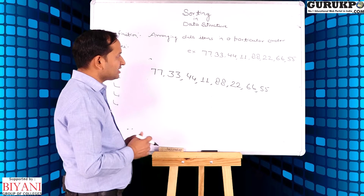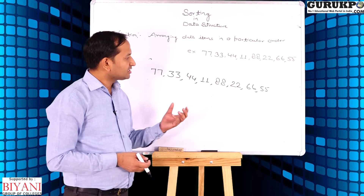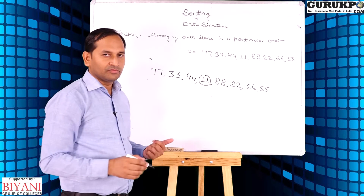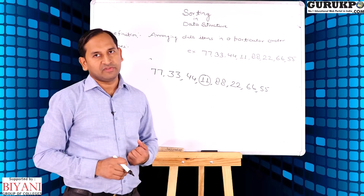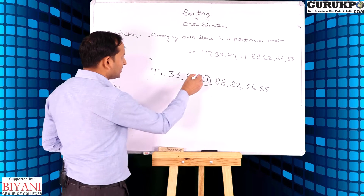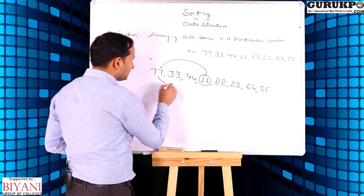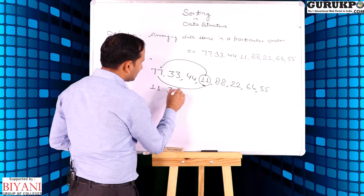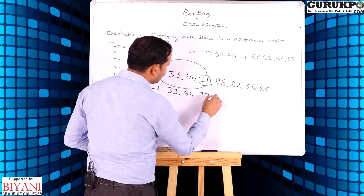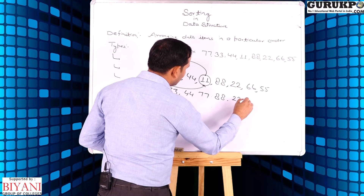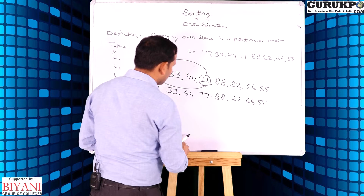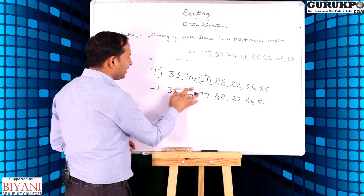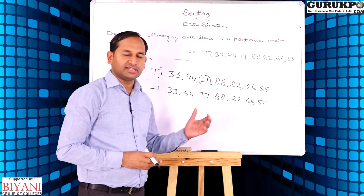In this given list, first we scan the entire list and identify the smallest element. We can observe the fourth element, that is 11, is the smallest element in the given list. So we swap or insert this element in the first place. Now the list will be: 11, 33, 44, 77, 88, 22, 66, 55. In pass 1, the smallest element 11 is shifted to its proper place.